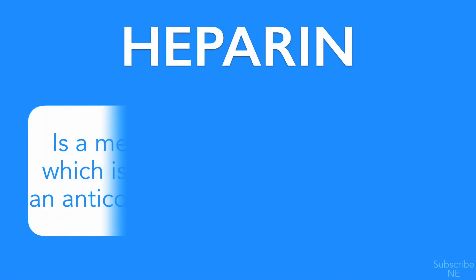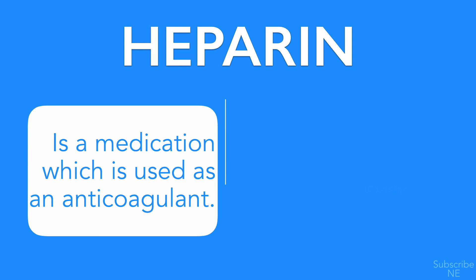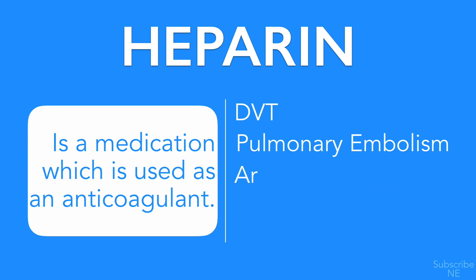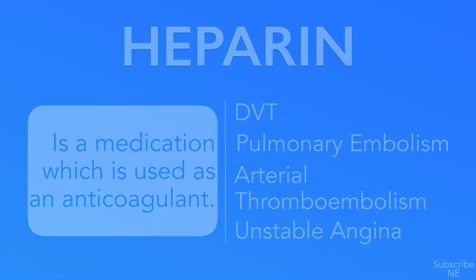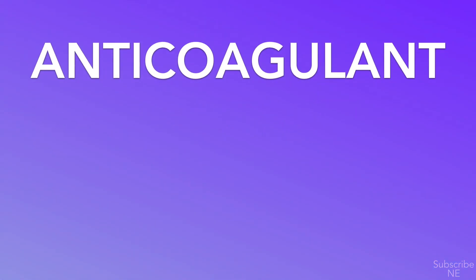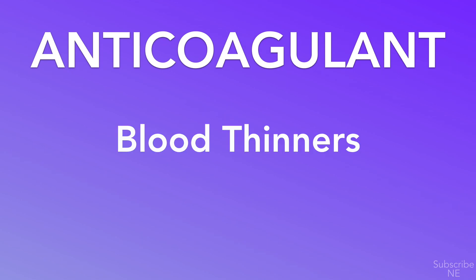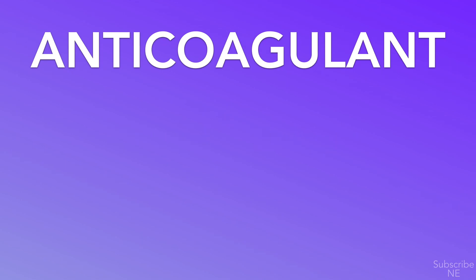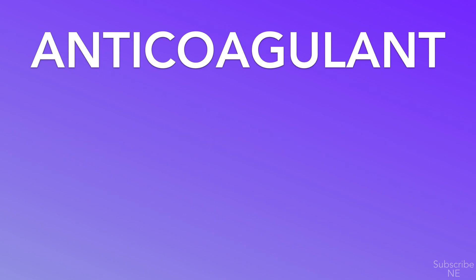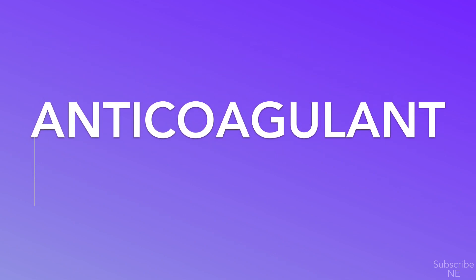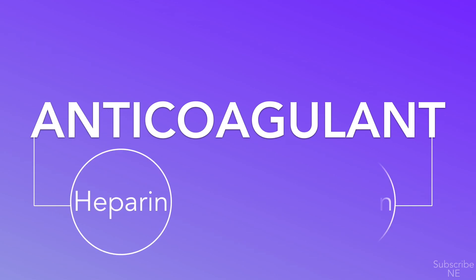Heparin is a medication used as an anticoagulant. Specifically, it is used to treat and prevent deep vein thrombosis, pulmonary embolism, and arterial thromboembolism. It is also used in the treatment of heart attacks and unstable angina. Anticoagulants are commonly referred to as blood thinners — chemical substances that prevent or reduce coagulation of blood by prolonging the clotting time. The most common types of anticoagulants include heparin and warfarin.